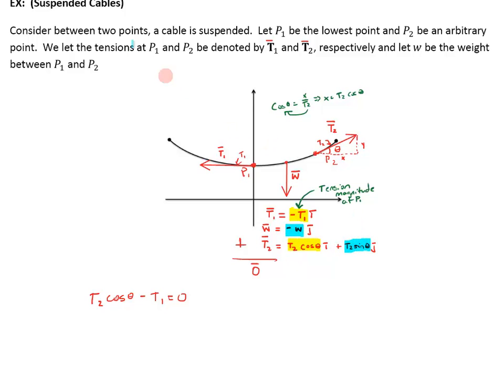And also, here I'll highlight it in blue, the Y components add up to equal zero. By the way, before I do that, let me go ahead and write this out. That means T1 has to equal T2 cosine of theta. Now, over here, since W is negative plus T2 sine of theta, that tells us that T2 sine of theta minus the weight of that section has to equal zero, or T2 sine of theta is W.